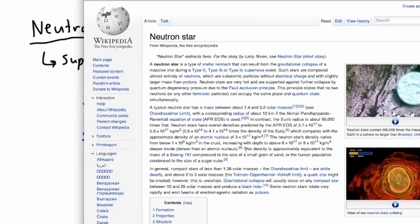They say the density is approximately equivalent to the mass of a Boeing 747 compressed to the size of a grain of sand, or the human population condensed to the size of a sugar cube. I thought this sugar cube and human population was an interesting way to look at it. With my own students, we've actually gone into these details.